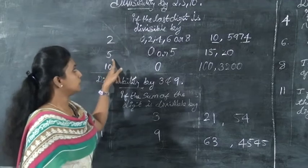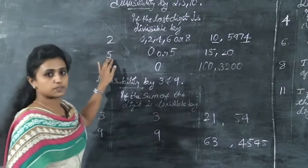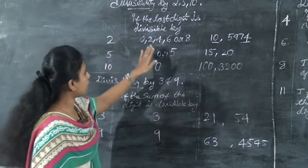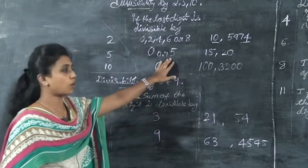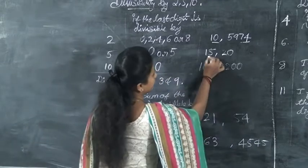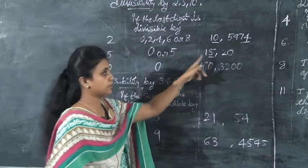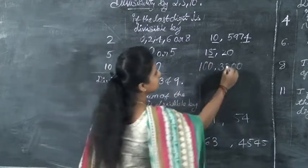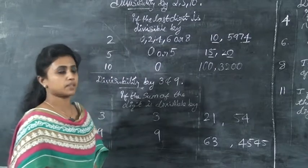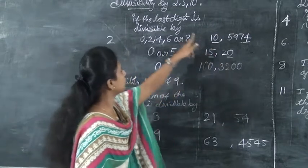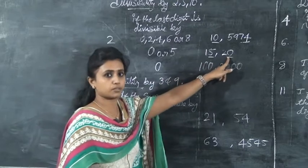Now what about 5? The condition for 5 is that a number is divisible by 5 if the last digit is 0 or 5. For example, 15: the last digit is 5, which means 15 is divisible by 5. And 20: the last digit is 0, which means 20 is divisible by 5. Note that 0 is also divisible by 2.